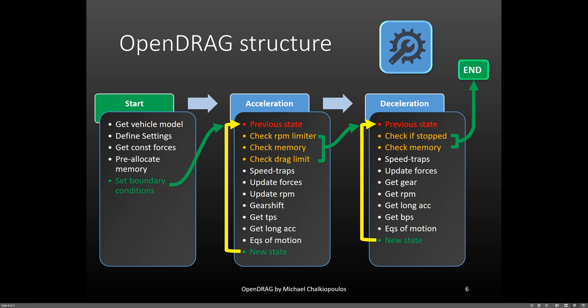Now let's go through the code structure. OpenDrag's structure can be seen in this diagram. The code starts by reading the specified vehicle model, then it reads the user settings. After, it calculates all the forces that remain constant throughout the simulation. Then it pre-allocates some memory for the solution. And finally, to finish the initialization stage, it sets the boundary conditions that are true for the acceleration sequence. With initialization complete, it starts accelerating the vehicle. While accelerating, it checks if the vehicle has hit the RPM limiter or shift point, if the pre-allocated memory is full, and if the vehicle is drag limited.